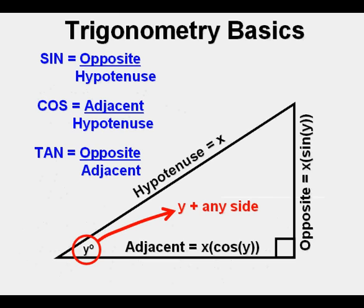Using these relationships we can find the measure of all sides of any right triangle if we know just two things: the measure of angle Y plus the length of any side, any of the sides of the triangle.